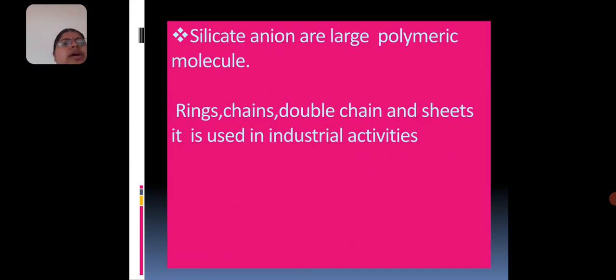The silicate anions are large polymeric molecules. These silicates form long chains of Si bonded to O. Large chains may form rings, double chains, triple chains, sheets, etc. It is mainly used in industrial activities.